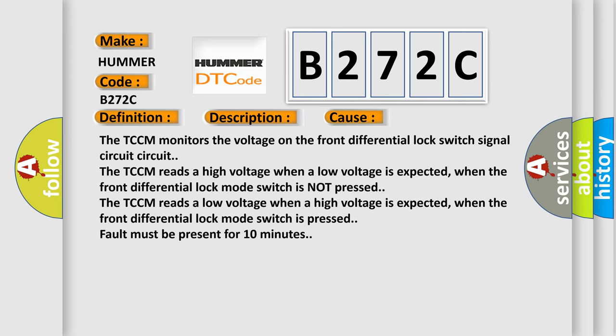The TCCM monitors the voltage on the front differential lock switch signal circuit. The TCCM reads a high voltage when a low voltage is expected, when the front differential lock mode switch is not pressed. The TCCM reads a low voltage when a high voltage is expected, when the front differential lock mode switch is pressed. Fault must be present for 10 minutes.